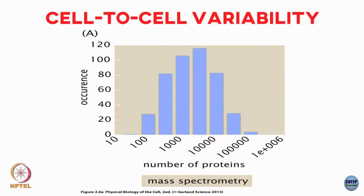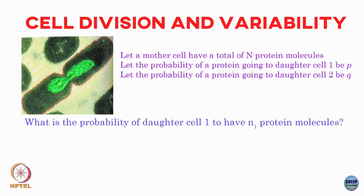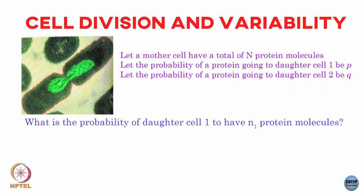One simple possible cause of this variation is cell division. When a cell divides into two daughter cells, each daughter cell gets some copies of the proteins of the mother cell. In a very simple, naive calculation: a mother cell has some total N protein molecules. The probability of one protein molecule going to daughter cell 1 is P, and the probability of going to daughter cell 2 is Q. What is the probability that daughter cell 1 has n1 protein molecules? It's the binomial distribution.